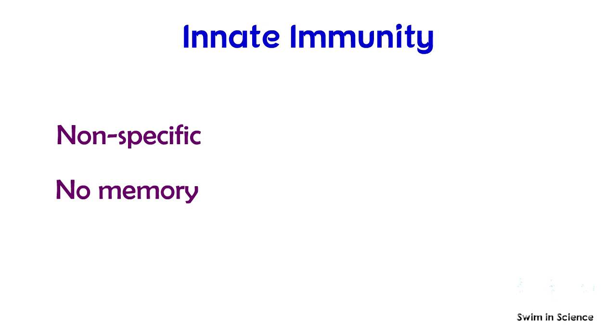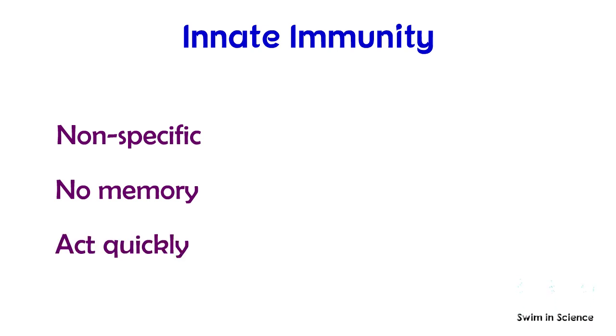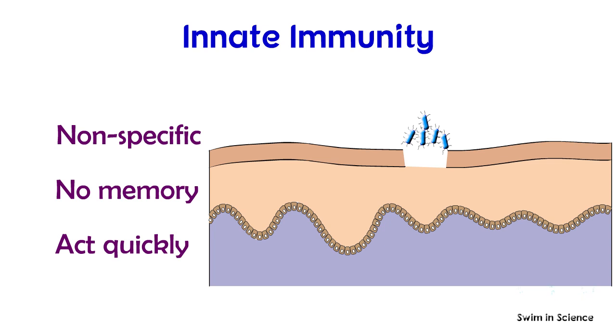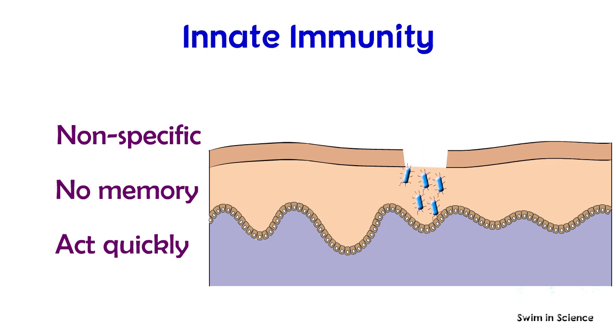Cells involved in innate immunity act quickly. For example, it makes sure that bacteria that have entered the skin through a small cut or wound are detected and destroyed on the spot within a few hours.